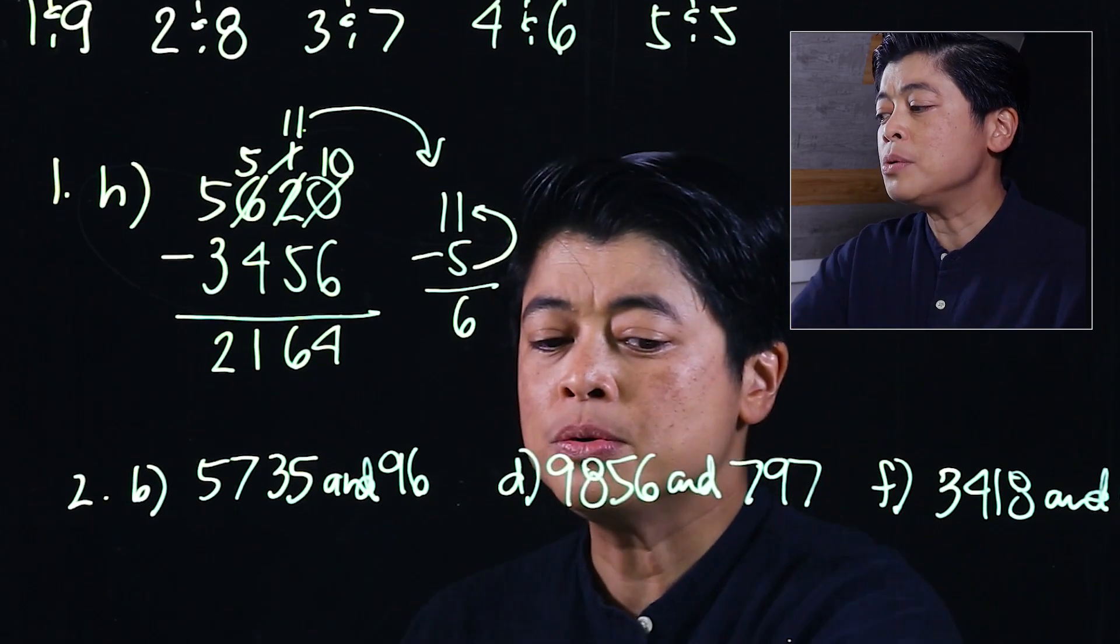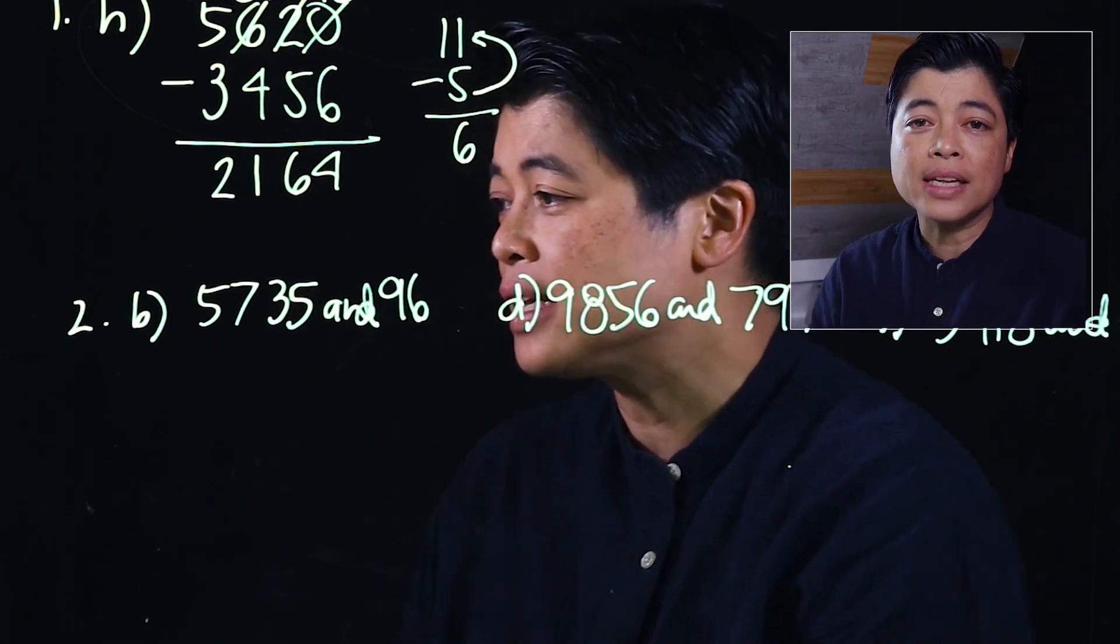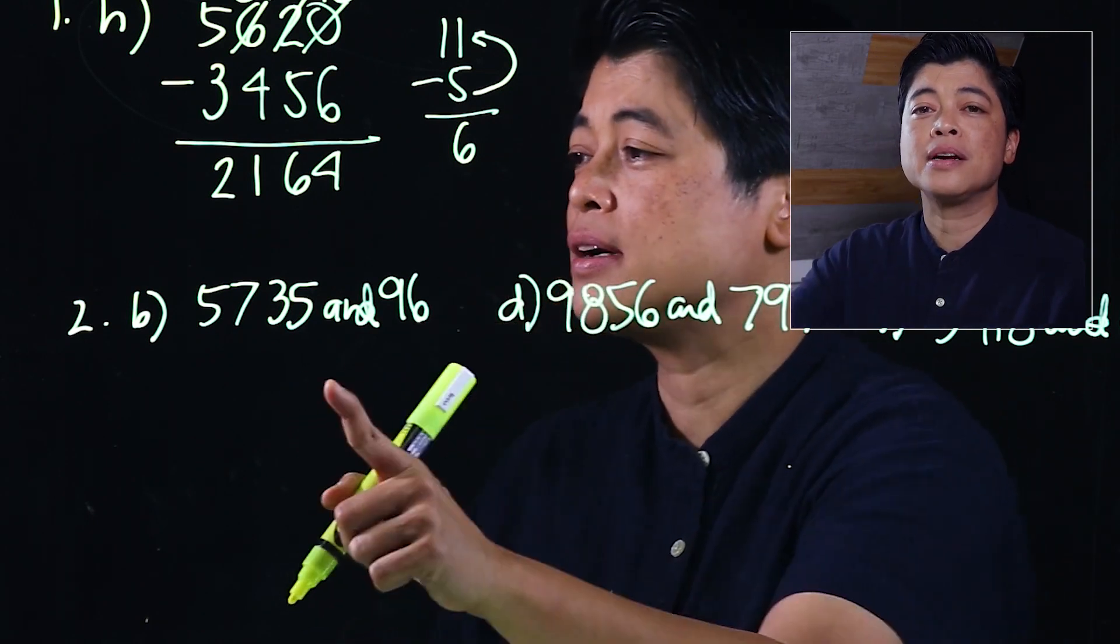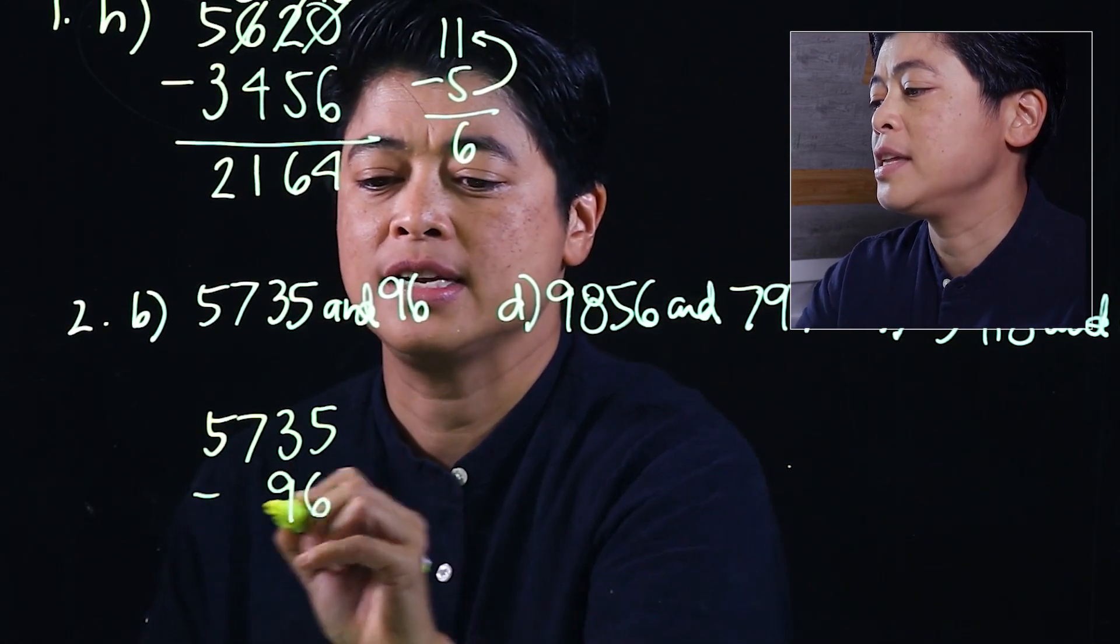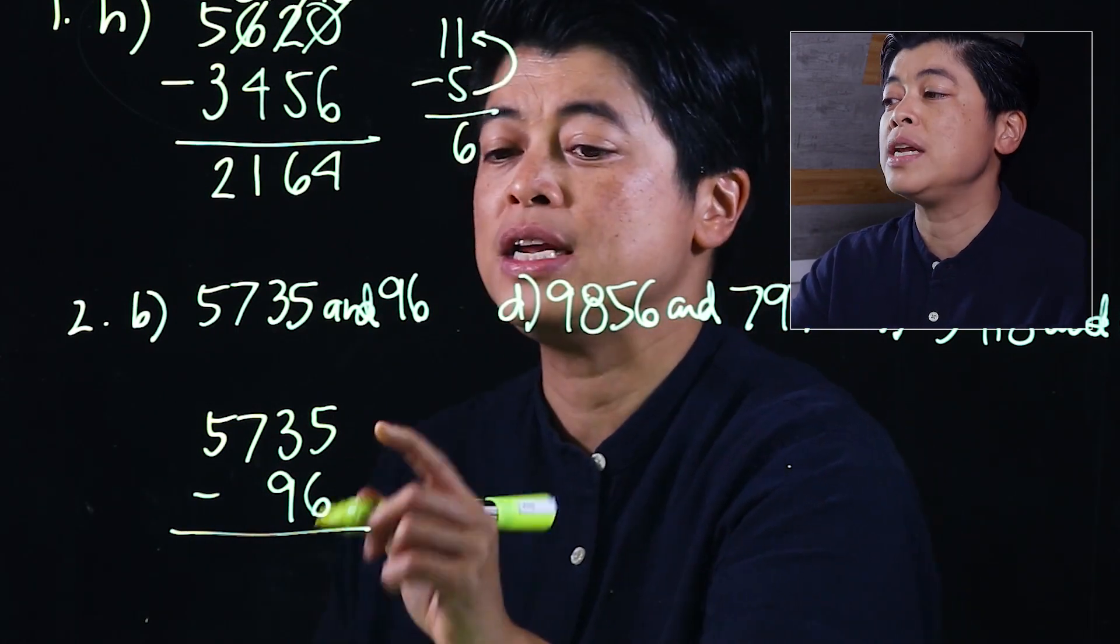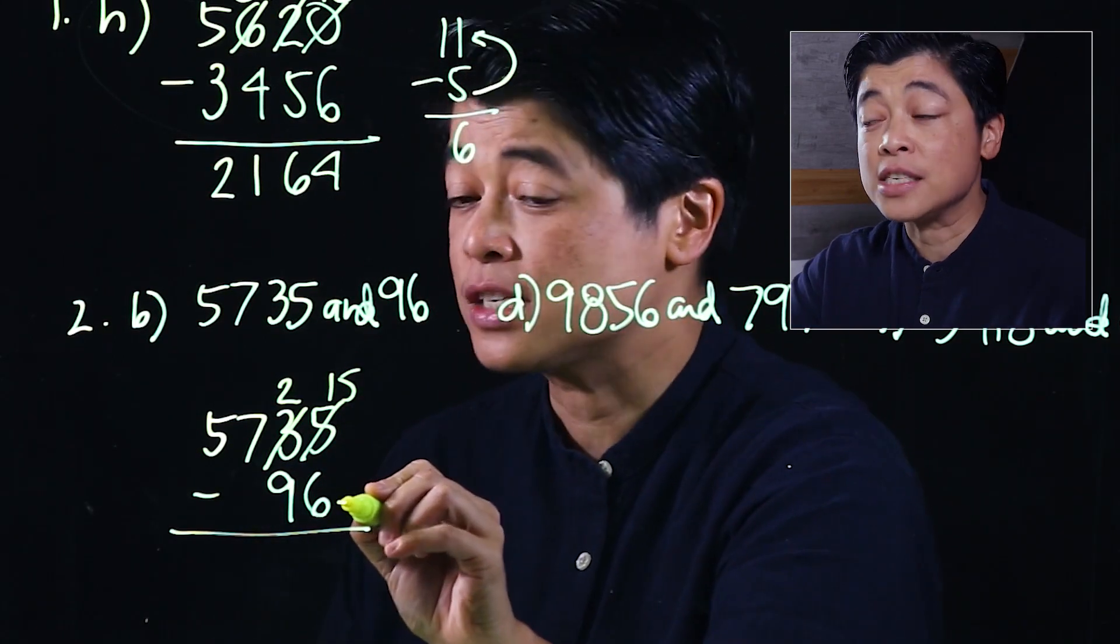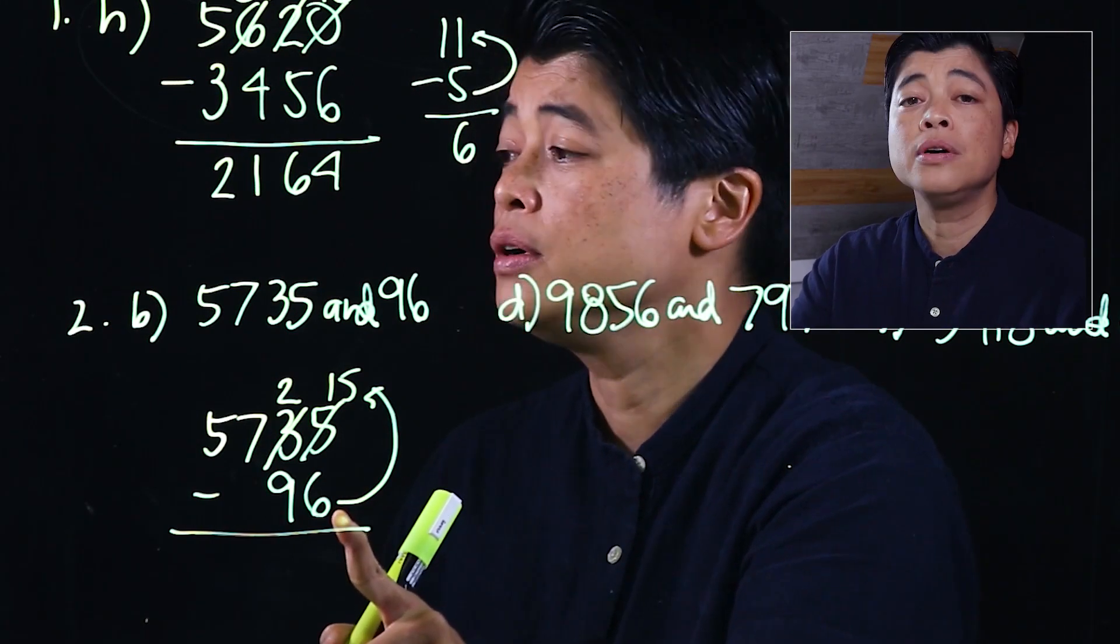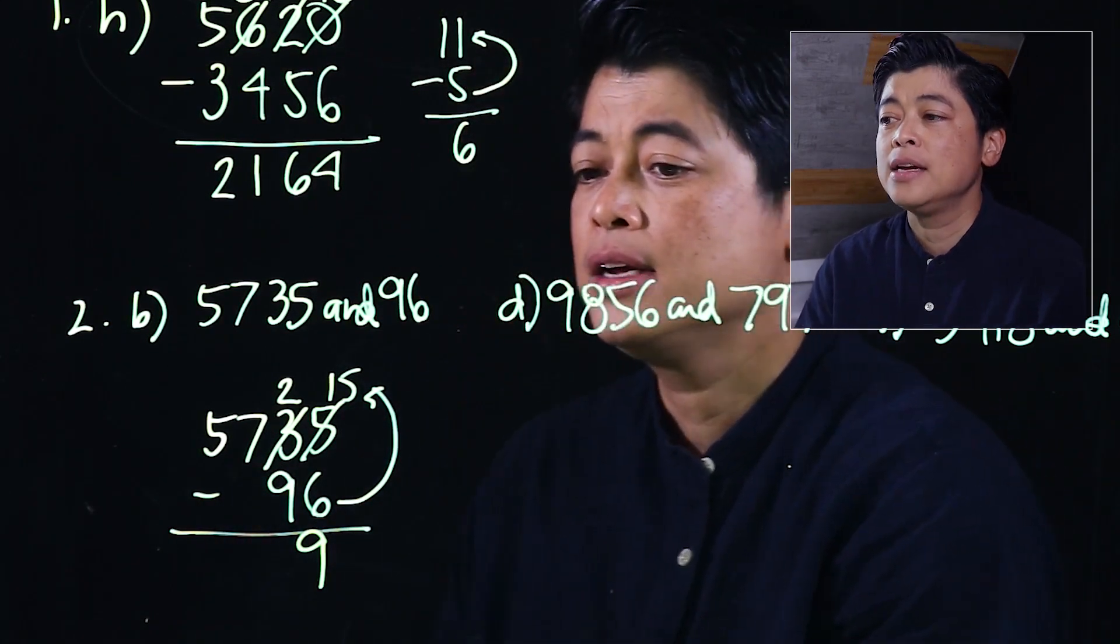In problem 2 it says find the difference between the numbers, so we have to write it in computational form with the bigger number on top. We leave space because this has regrouping: 5735 minus 96. Subtracting 6 from 5 cannot be, so we need to borrow and regroup. We start with 6, we need to count to 15, so we need 4 more to get to 10 and then another 5, which means this is 9.